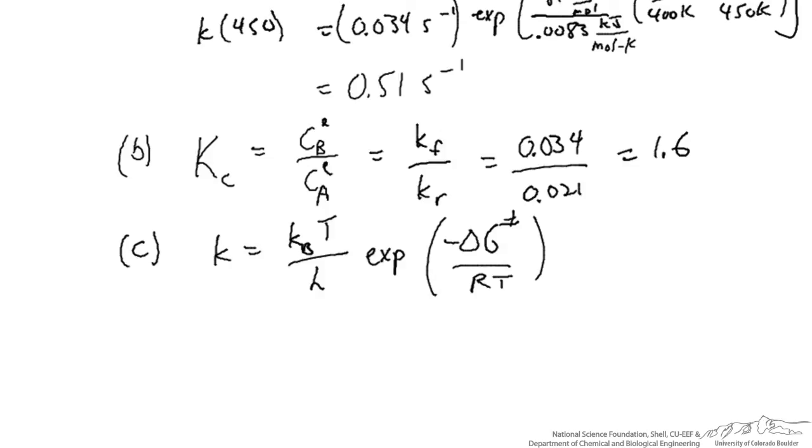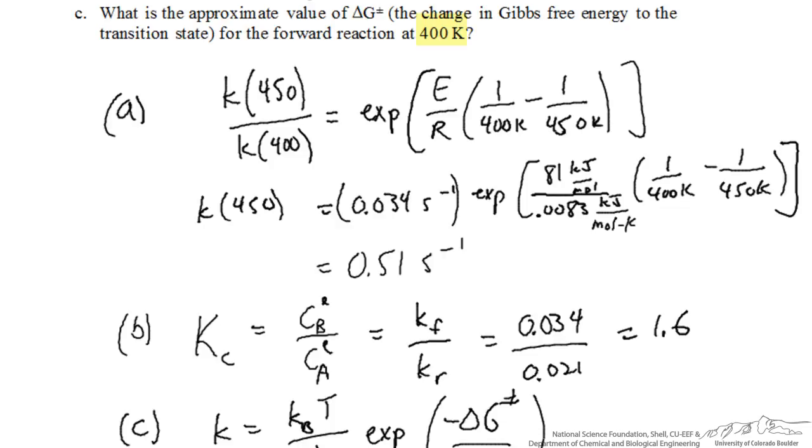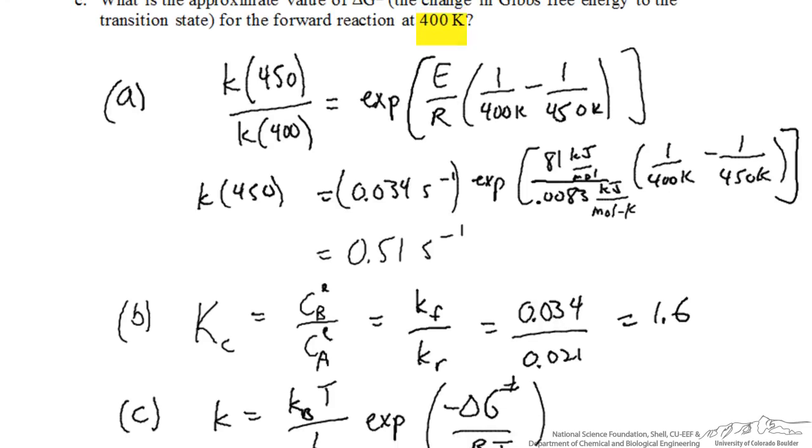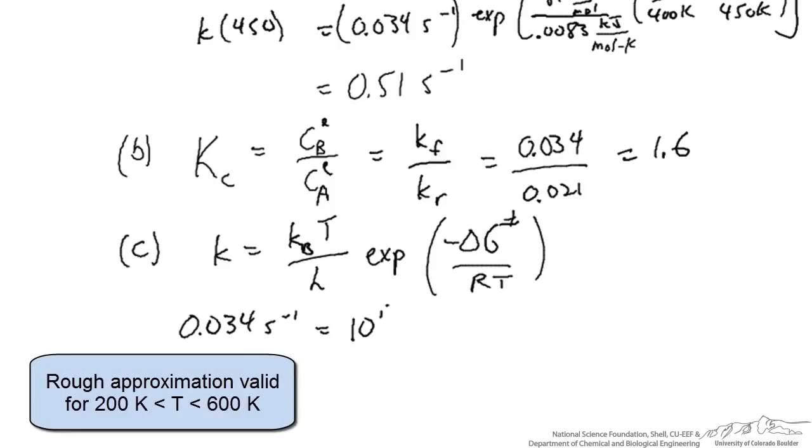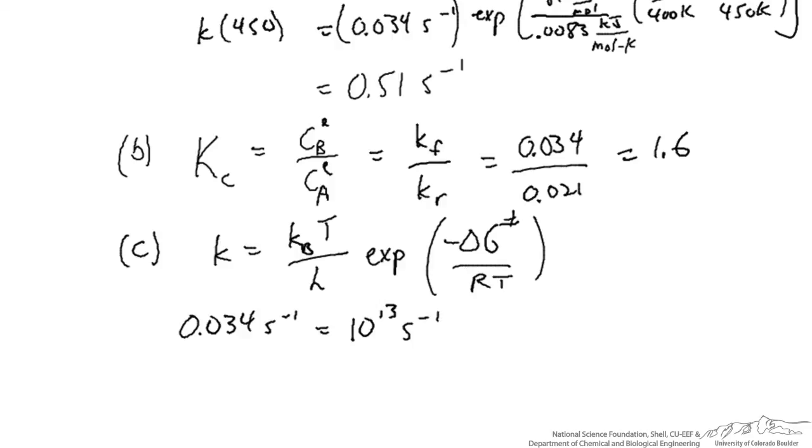We are asked to provide delta G at 400 Kelvin. If we start plugging in values, then at 400 Kelvin we have 0.034 reciprocal seconds for K. KBT over H can be approximated as roughly 10 to the 13 reciprocal seconds without having to deal with all of those constants, and then we multiply that by this exponential.